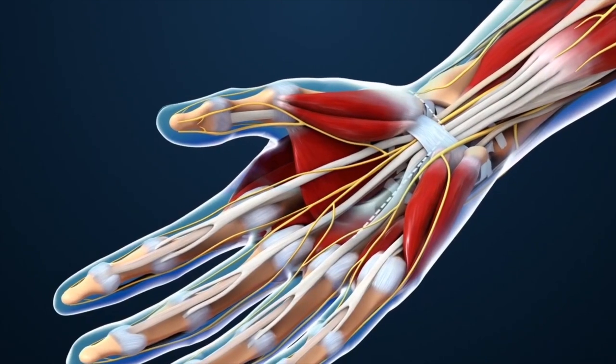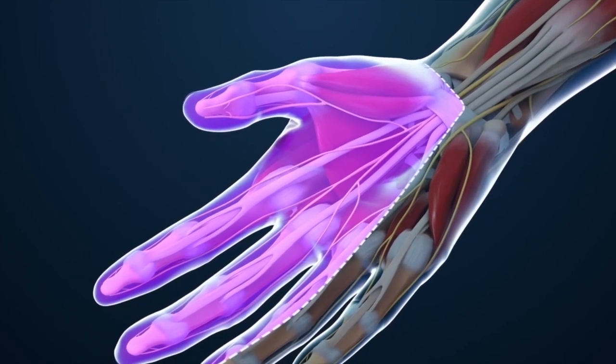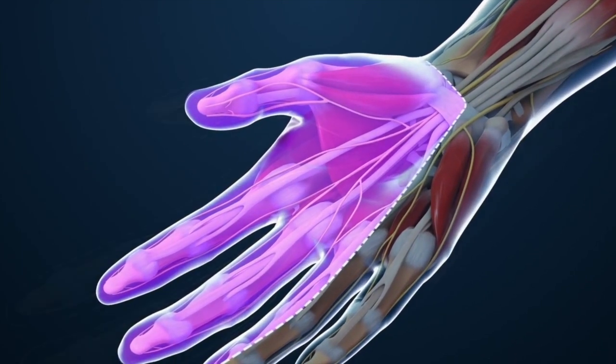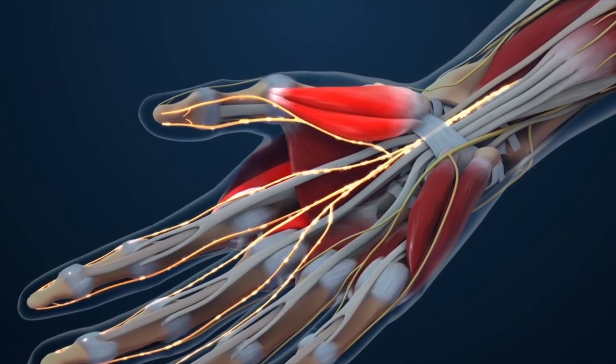The median nerve allows for feeling in the thumb, index finger, middle finger, and half of the ring finger. It also controls the muscles around the base of the thumb.